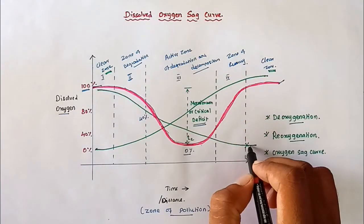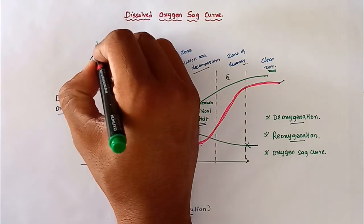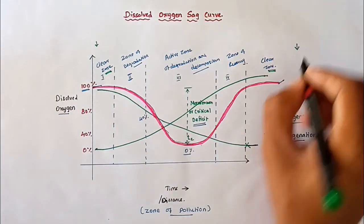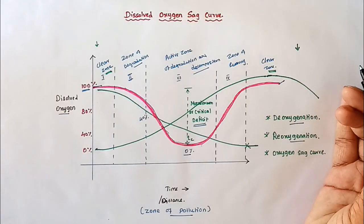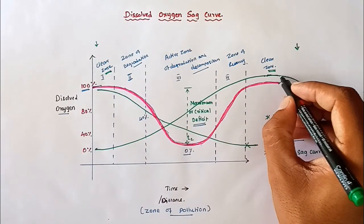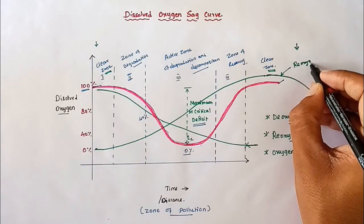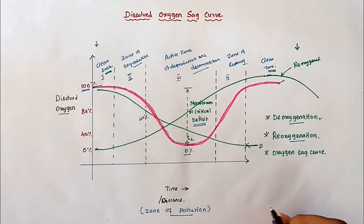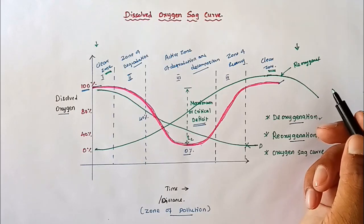This curve is continuous — if you add effluent at any point, the curve continues and the process repeats at every stage. This is called the oxygen sag curve and the oxygen deficit curve. One curve is called the reoxygenation curve and the other is the deoxygenation curve. If you have any doubts, please comment in the comment section. We will see more in the next video, thank you.